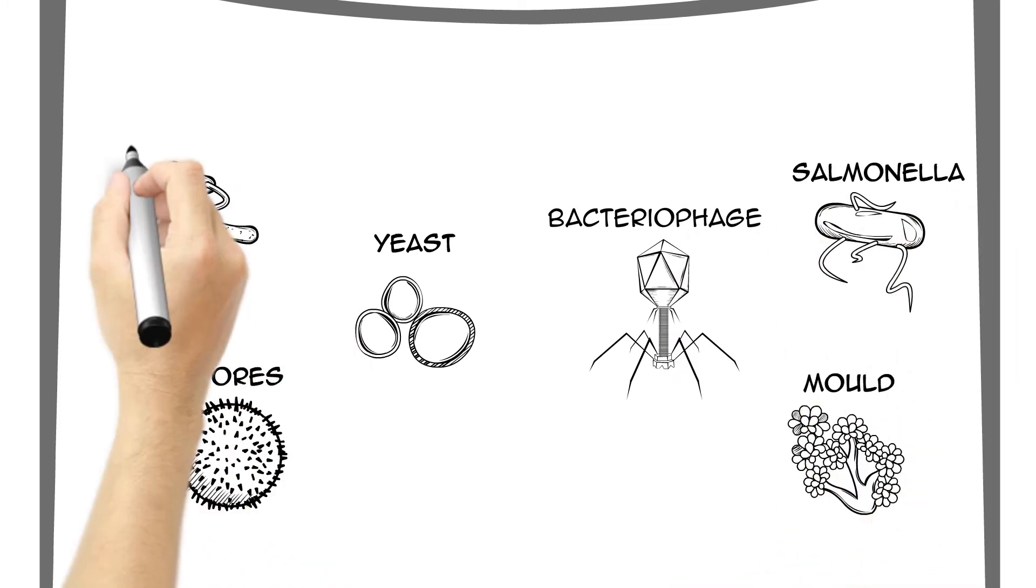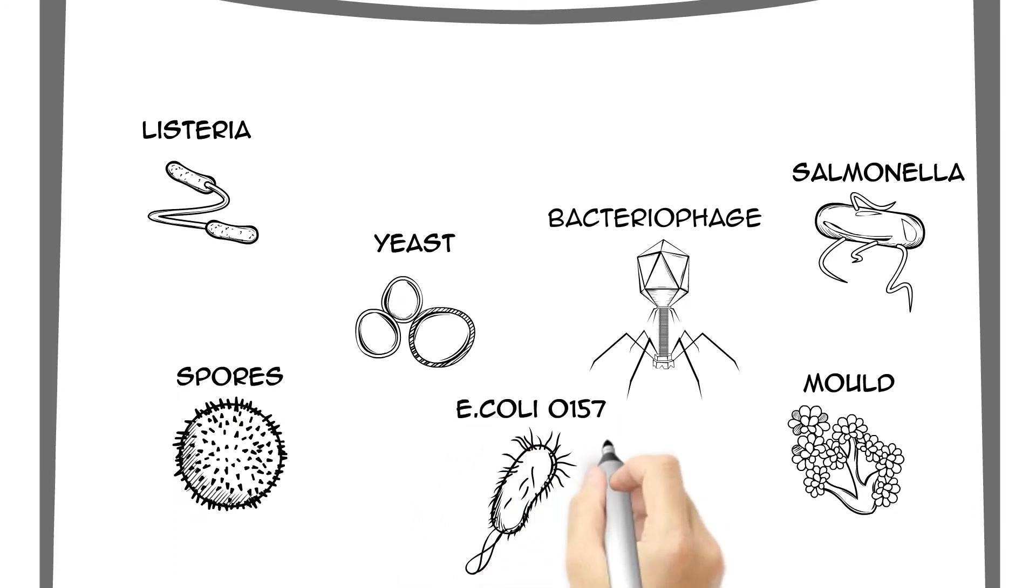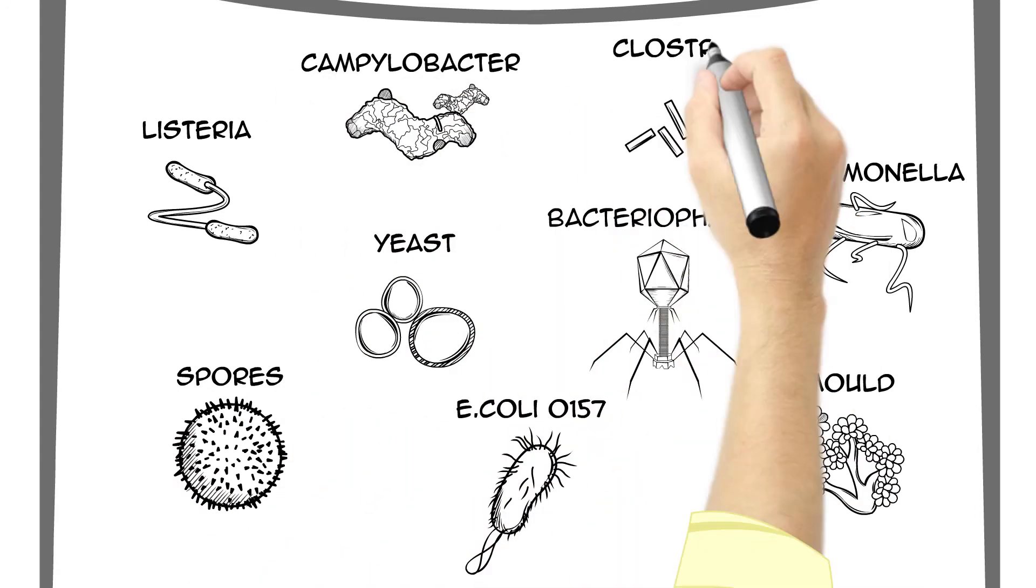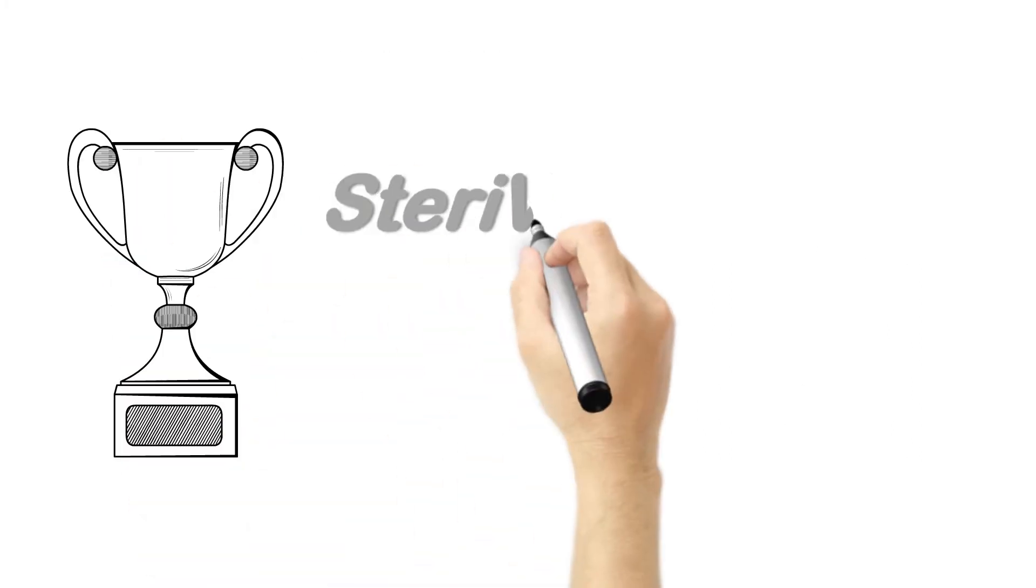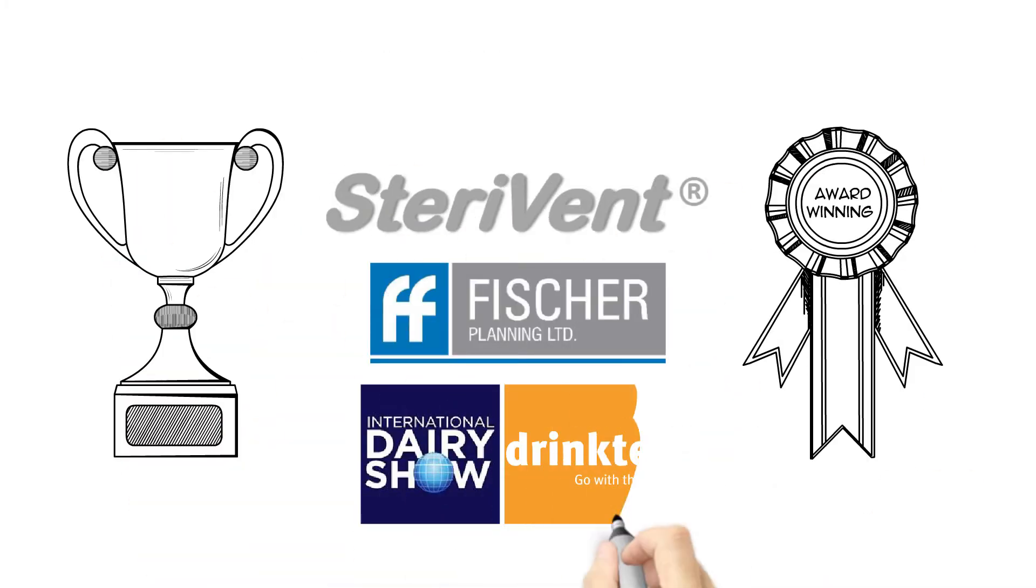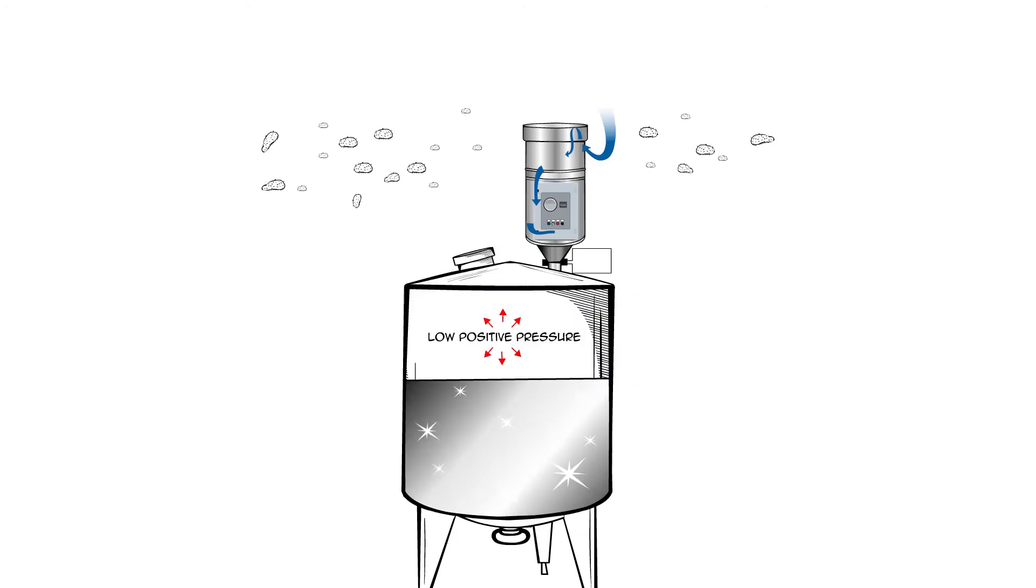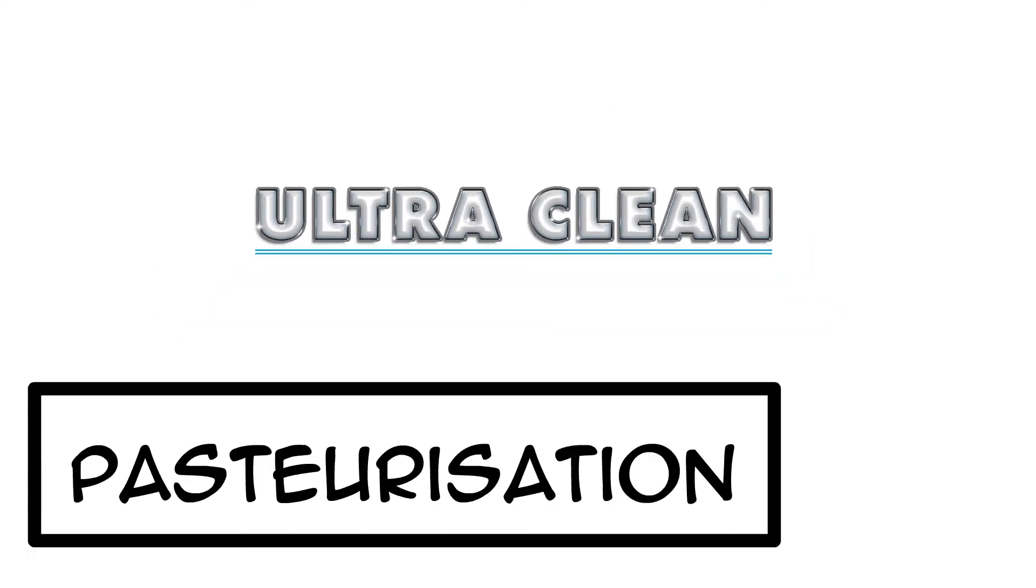Like salmonella, listeria, E. coli O157, campylobacter, and clostridium perfringens. SteriVent from Fischer Planning is the award-winning technology that can help your business develop an ultra-clean product.